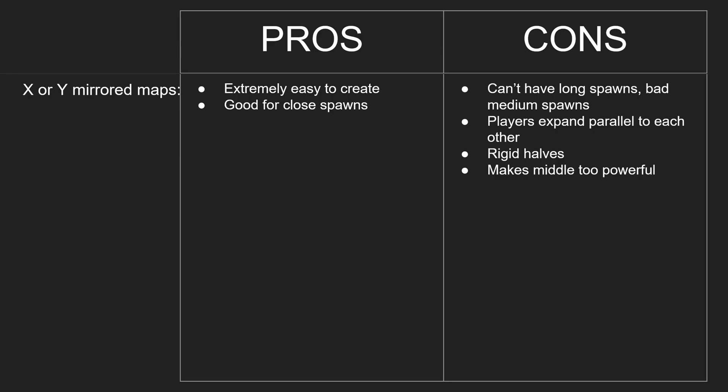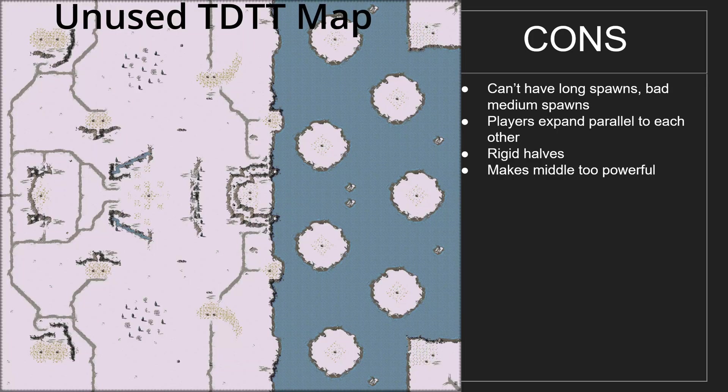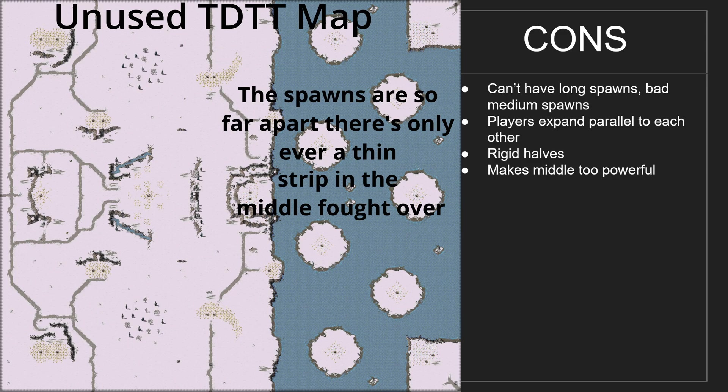For maps mirrored over just the X or Y axis: they're extremely easy to create — I could probably finish one in 30 to 45 minutes with all the aesthetic features. They're really good for close spawns; you can imagine a U-shape symmetry and just expand one way. The cons: you can't have long spawns at all, and medium spawns tend to play pretty bad. If you have long spawns on a single-axis flip, you end up on opposite ends of a really long map with so much wasted space just trying to reach the middle.